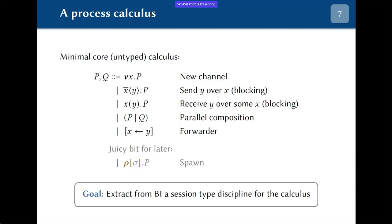We are looking at a calculus that at a minimum needs to be able to create a new channel, send some message Y over channel X and then continue, or receive a message Y over channel X and then continue. We can put processes together in parallel, and for technical reasons we also have a forwarder process that can copy whatever is happening on channel Y onto channel X. We also have extra primitives — some I'll leave for later and some I'll omit for brevity, like branching and closing channels.